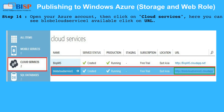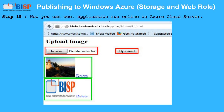Step 14: Open your Azure account, then click on Cloud Services. Here you can see the blob cloud service available — click on the URL. Step 15: Now you can see the application running online on the Azure cloud server.